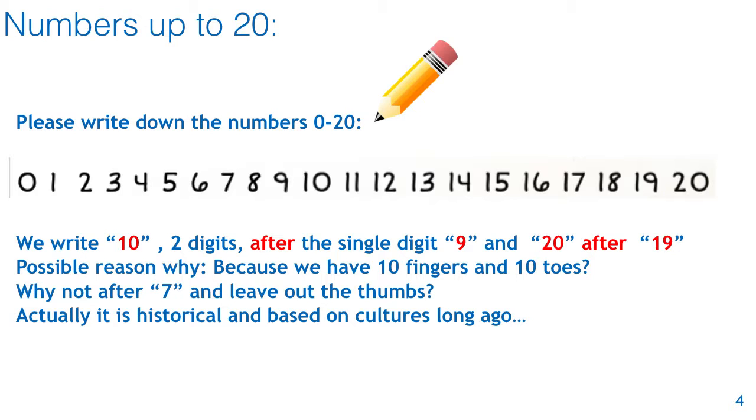Why is this? Is it because we have ten fingers and ten toes that we go from one digit to two when we go after nine? Why not seven and leave out the thumbs? Now actually, it's historical. It's based on cultures long ago. And maybe some of you will research that in class when we do a web quest on the numbers.